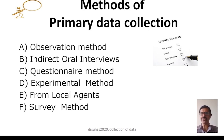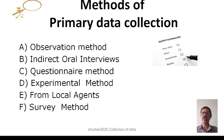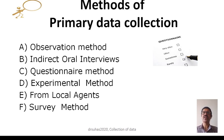In the observation method, the investigator observes the participant and makes note of the participant. It is very commonly practiced in behavioral sciences. The indirect oral interview is the most often-used method, where there is a one-to-one interview or the interview could happen in a group. The questionnaire method involves a set of questions prepared and given for evaluation. The experimental method uses various types of experiments, laboratory investigations, or techniques for collecting data.